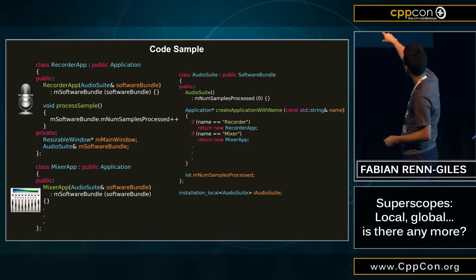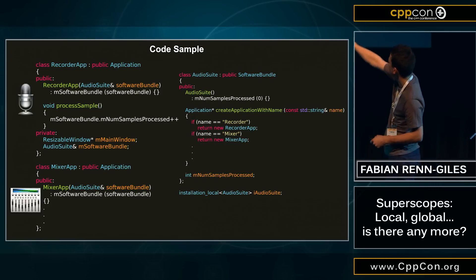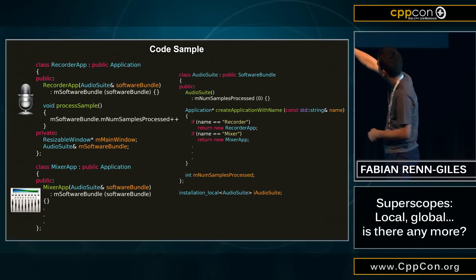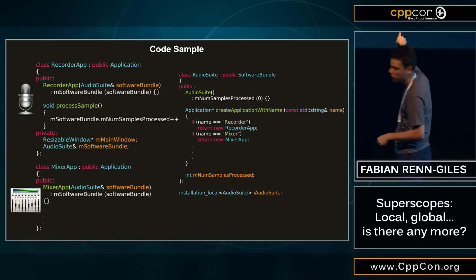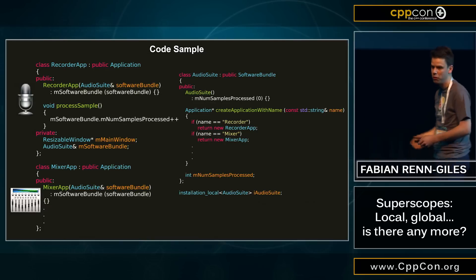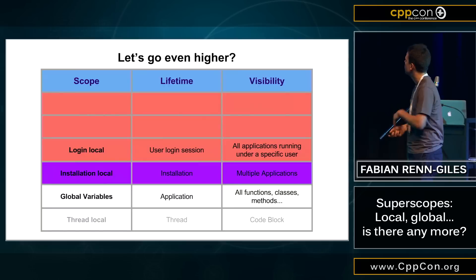That means when you install it, the software bundle class gets instantiated; when you uninstall it gets destructed. Every time the user double-clicks on one of those applications, `create_application_with_name` is called. And look at the left side at `process_sample` - I'm sorry I don't have a laser pointer - but you can see how it increments `num_samples_processed` which just points into the software bundle class. So everybody can talk to that variable and use it like a normal variable.